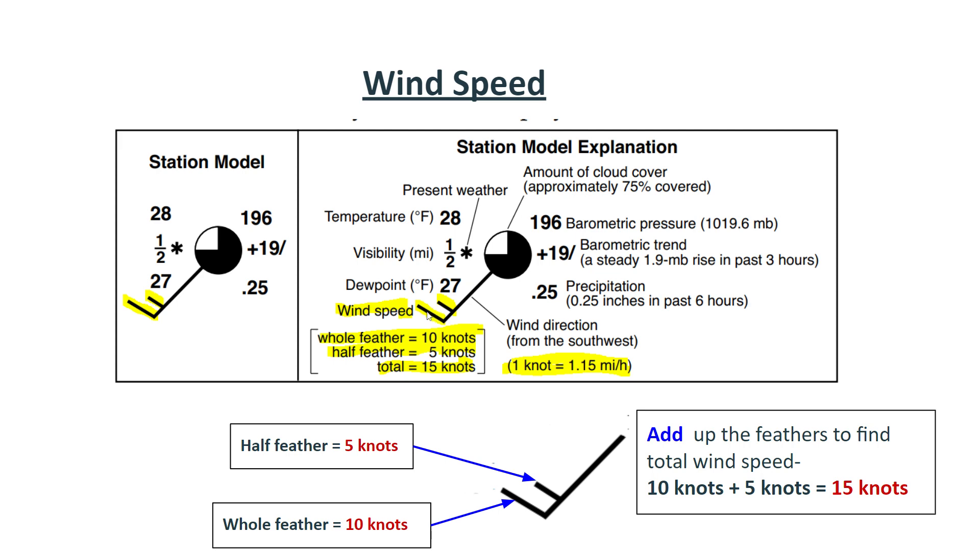So if this is 10 knots, the bigger line, and this is 5 knots, the smaller line, then 10 plus 5 is 15. So your total wind speed is 15 knots. That's it. So you might have more of the bigger lines or more whole feathers or the smaller lines, more half feathers. And depending on how many you have, you just add them up and that will be your wind speed.